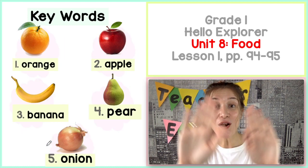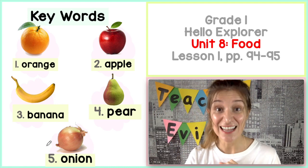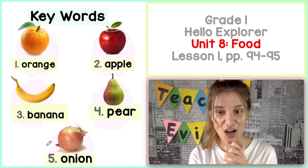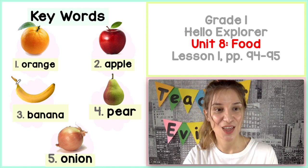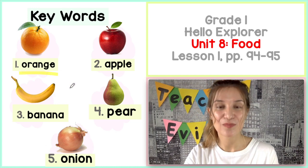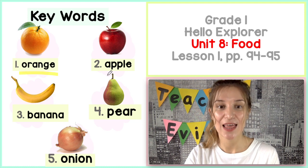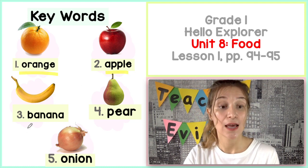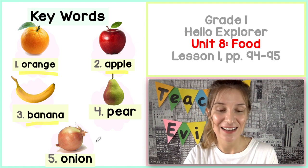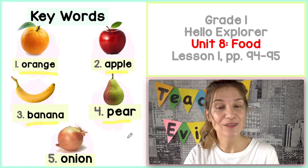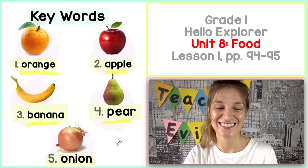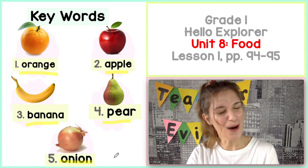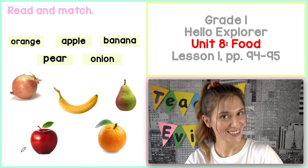Look at all of the keywords. Let's say them together. Are you ready? Powiemy razem. Jesteś gotowy? Ok, to powtarzaj po mnie. Orange. Apple. Banana. Pear. Onion. Wow, well done.